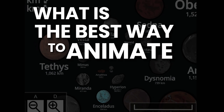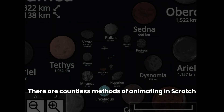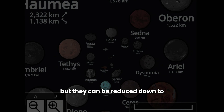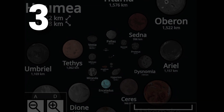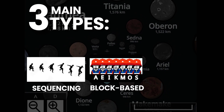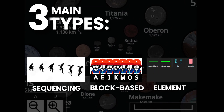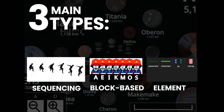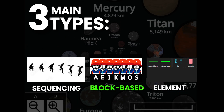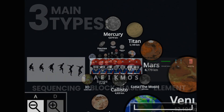What is the best way to animate in Scratch? There are countless methods of animating on Scratch, but they can be reduced down to three main types: sequencing, block-based, and element animation. And in today's video, we'll be looking at which is the most efficient and easiest method to use in your projects.